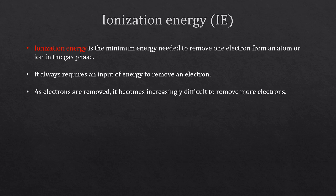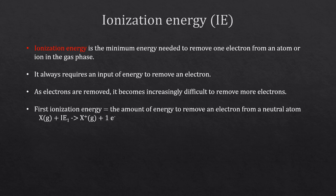Once an electron is removed, it becomes increasingly difficult to remove more electrons — each time you take away an electron from a system, it's going to get harder and harder. The first ionization energy, IE1, is the amount of energy to remove an electron from a neutral atom X in the gas phase. Putting in that energy pulls the electron away, leaving a plus-charged ion and a free electron.